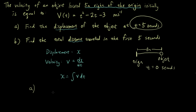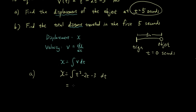So we take the velocity equation and insert it into the integral: ∫(t² − 2t − 3) dt. Using the integration formula, we get t³/3 − 2t²/2 − 3t plus a constant. That's the equation for displacement with respect to time.